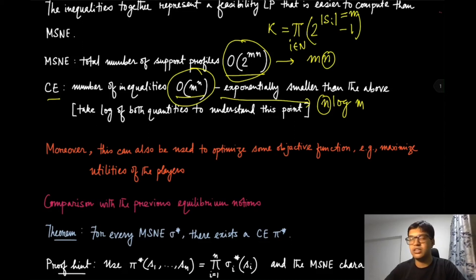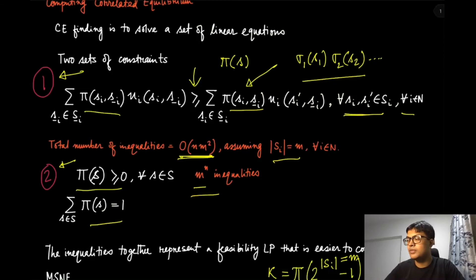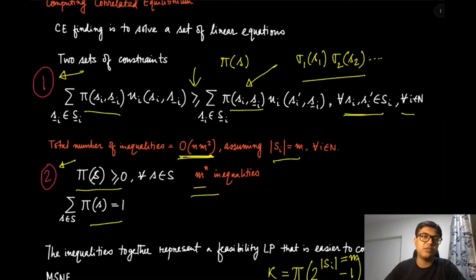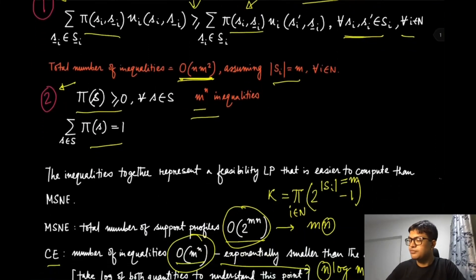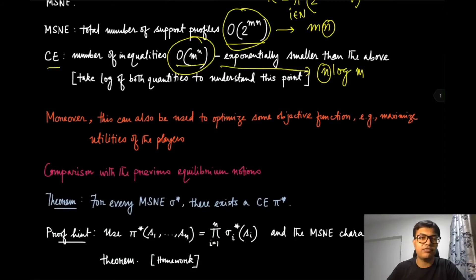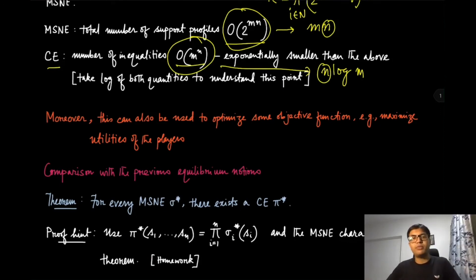In the constraint set we have all the constraints for the correlated equilibrium. We might be interested in, for instance, finding that correlated equilibrium which maximizes the sum of utilities of all players. That could be one feasible objective, and different objective functions give rise to different correlated equilibria.